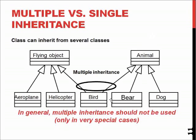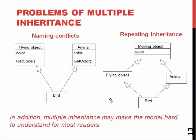As we know from programming courses, this is problematic since it may lead to naming conflicts or repeated inheritance. For example, if we have a bird which is a generalization of both animal and flying object...